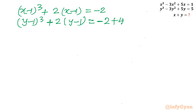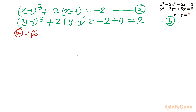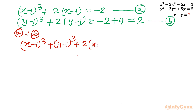Let me call equation A: (x-1)³ + 2(x-1) = -2, and equation B: (y-1)³ + 2(y-1) = 2. Now simply add both equations A + B. What we get is: (x-1)³ + (y-1)³ + 2(x-1) + 2(y-1) = 0, since -2 + 2 = 0 on the right-hand side.